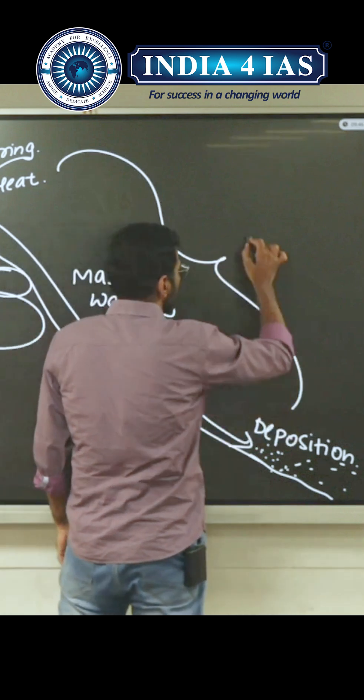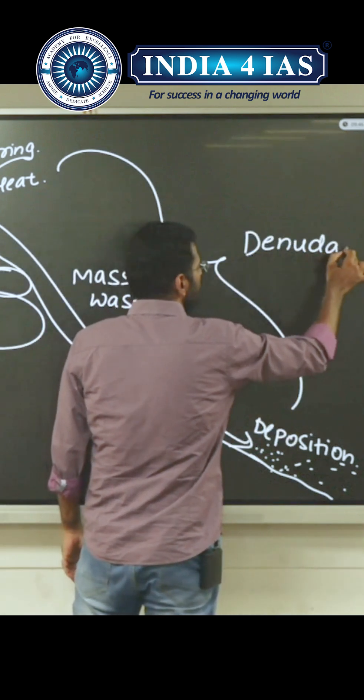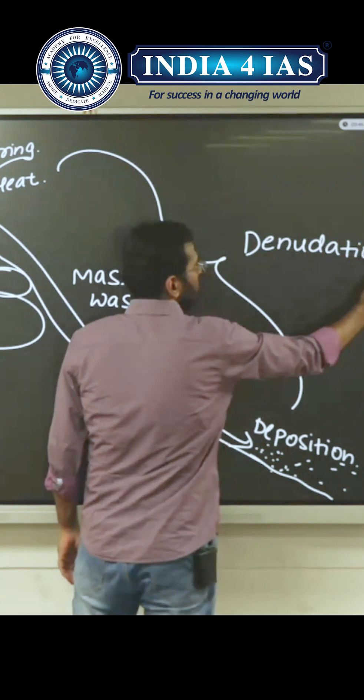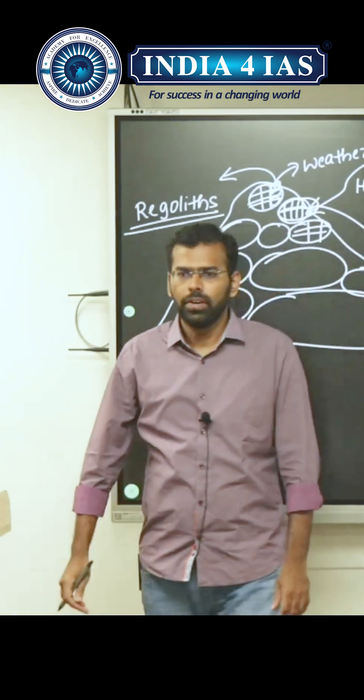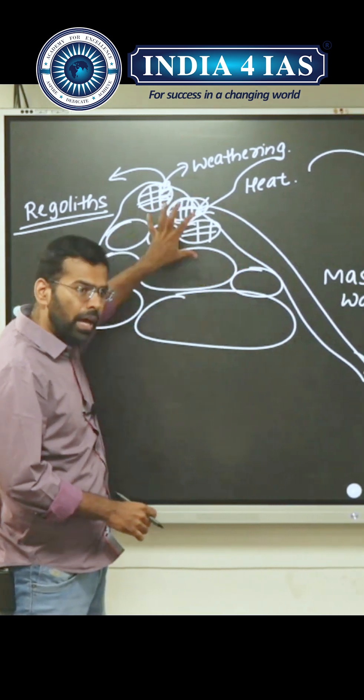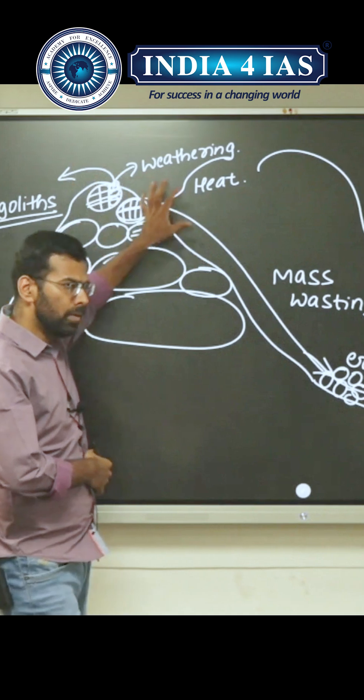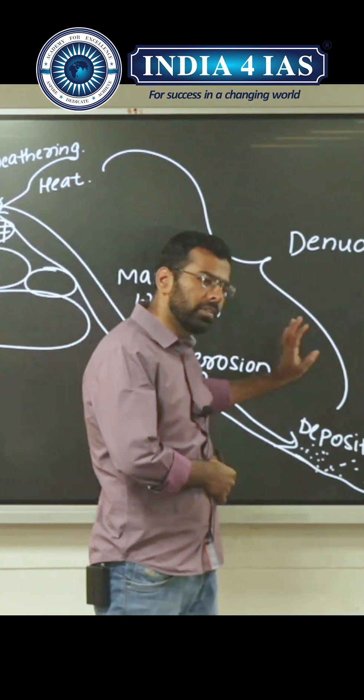This is the entire process of exogenic movements. This is called as denudation process. Denudation is basically wearing out, that's why reducing the height of the landform. Weathering, mass wasting, erosion, deposition.